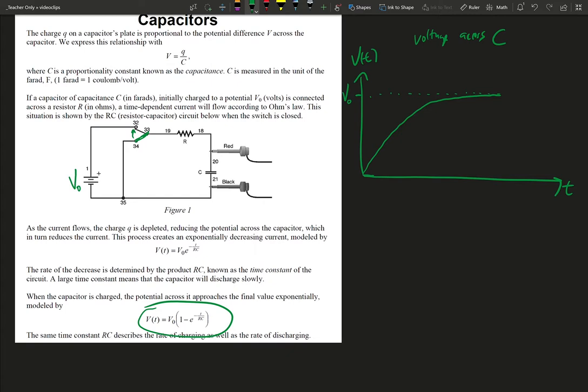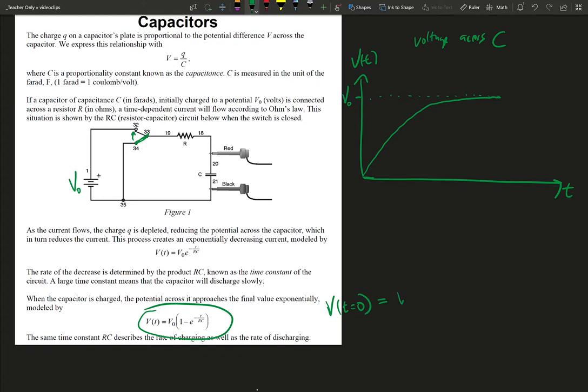But if I were to look at this equation and insert the value t equals zero, what would I expect to find? Well, I would get V0 times 1 minus E to the 0 power. And E to the 0 power, anything to the 0 power, is 1.